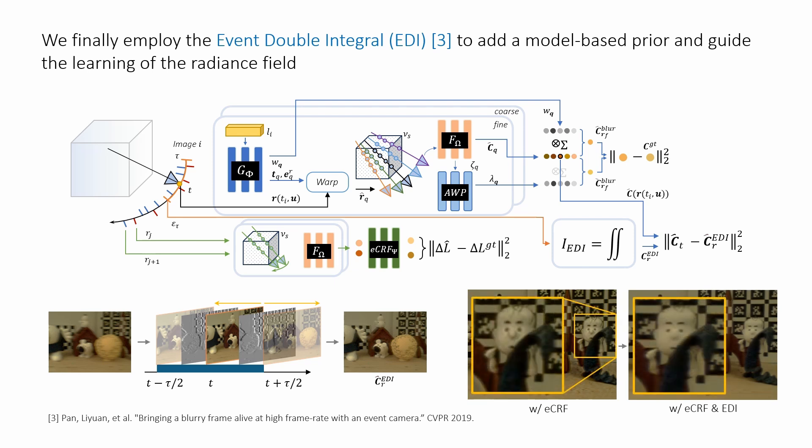This allows us to compute a deblurring prior, which we use to supervise the mid-exposure color, leading to improved rendering quality.